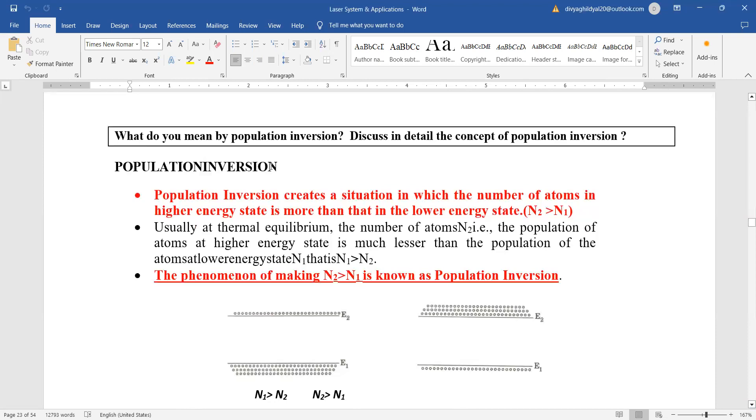So the word inversion comes from the word invert. That means we know that in a natural situation, the number of atoms in ground state is always greater than the number of atoms in the excited state. That means N1 is greater than N2.